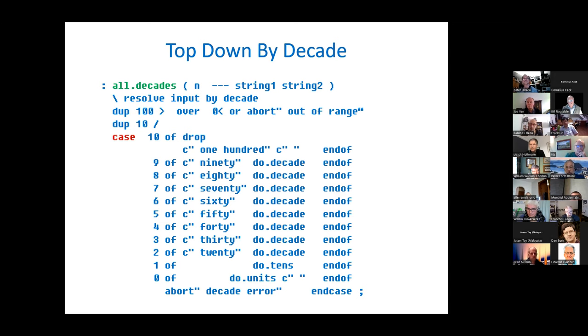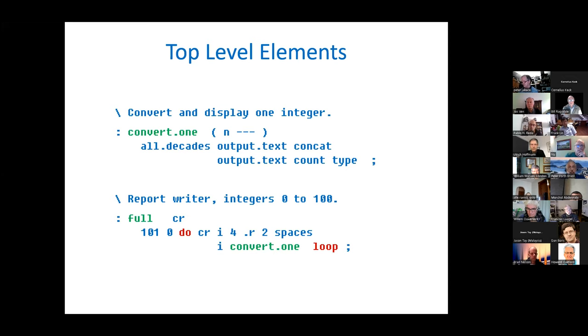This is the overall wrapper. The convert.one in green converts one decimal number. The all.decades does the translation for all of the decades. The output text concatenate moves the two strings concatenated together into the output text. All decades gets us two input strings, the output text concatenate joins them together and puts them into a workspace. Then finally, output text count type displays the output.